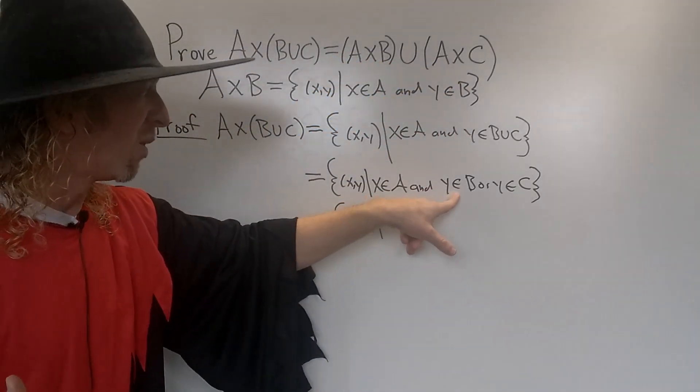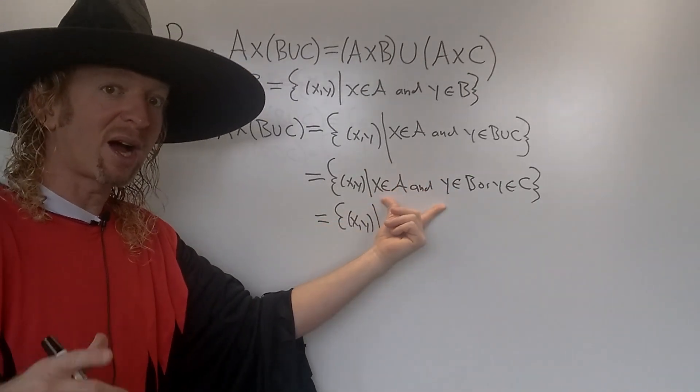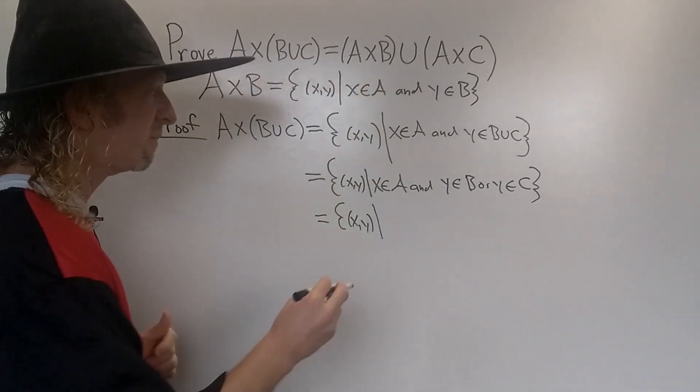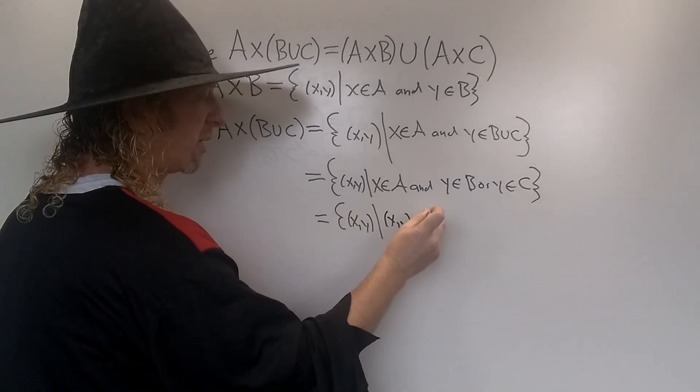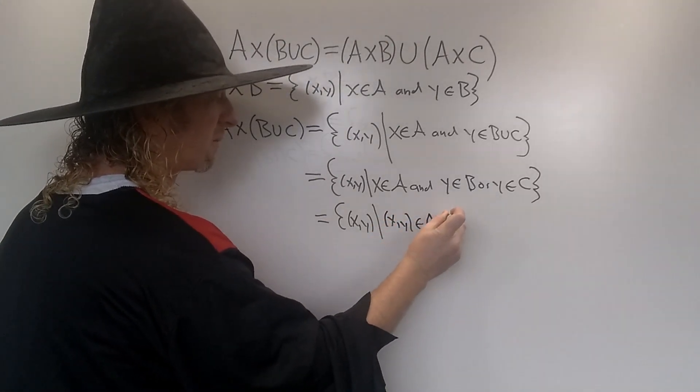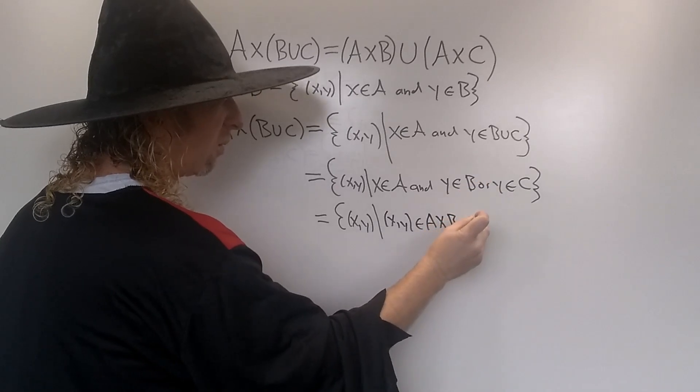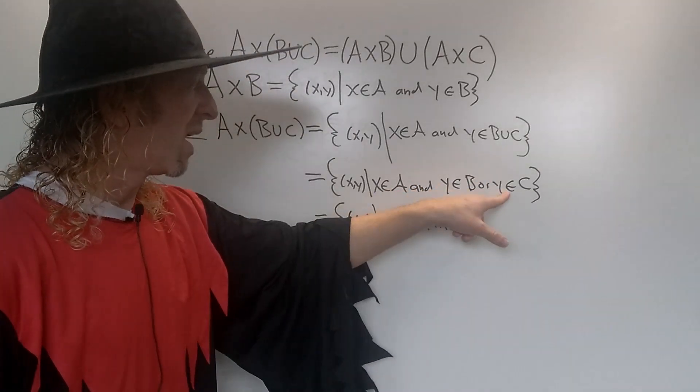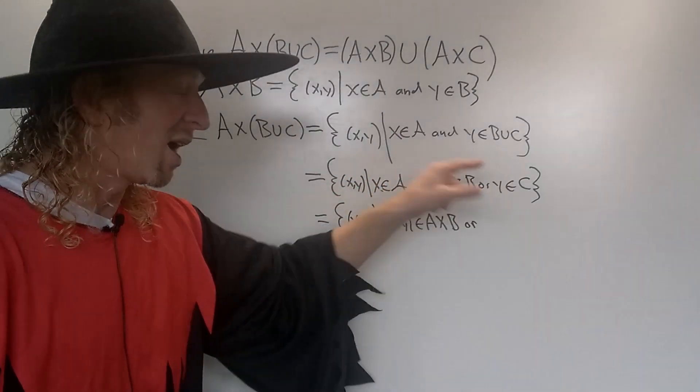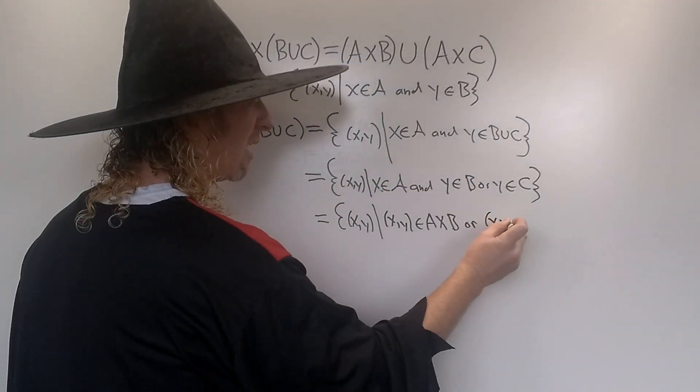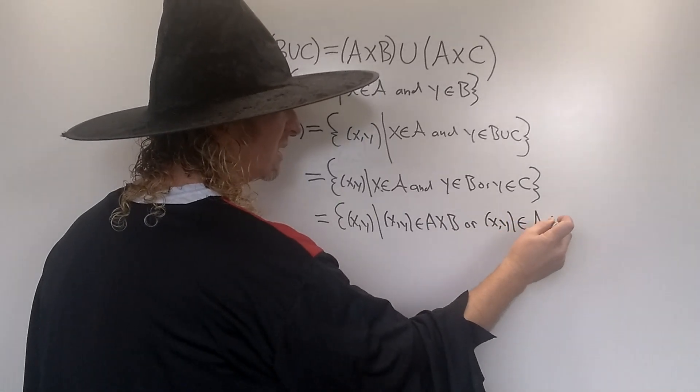We're trying to get to A×B and to A×C. Well, let's see. x∈A and y∈B—that means (x,y)∈A×B. So (x,y)∈A×B. Or x∈A and y∈C—so that means that (x,y)∈A×C.